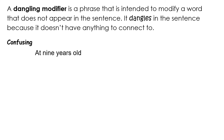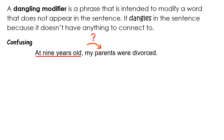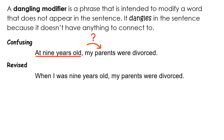Here's a confusing example: At nine years old, my parents were divorced. 'At nine years old' is a prepositional phrase, but who is it referring to? My parents? Were my parents nine years old? Here's a revised version: When I was nine years old, my parents were divorced. Now we have 'I was' in there, which clarifies who was nine years old.